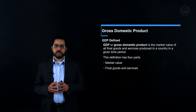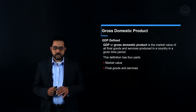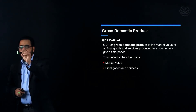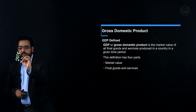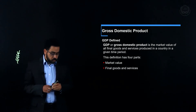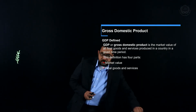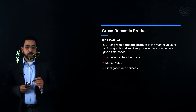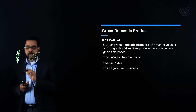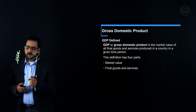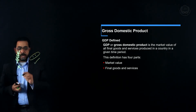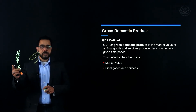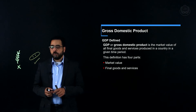Second, GDP includes only final goods and services — it excludes intermediate goods. So if we have wheat and we turn that wheat into bread, we calculate the bread but not the wheat.